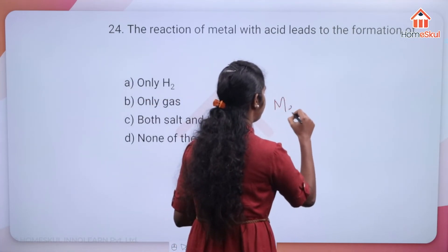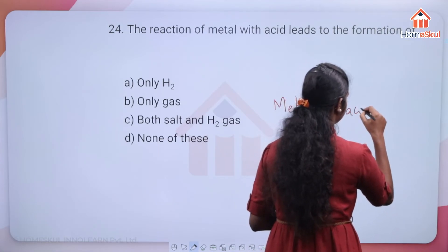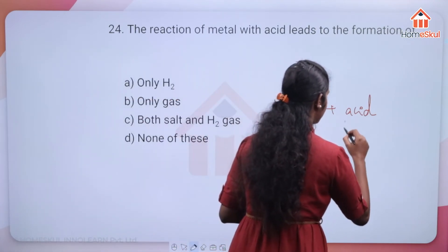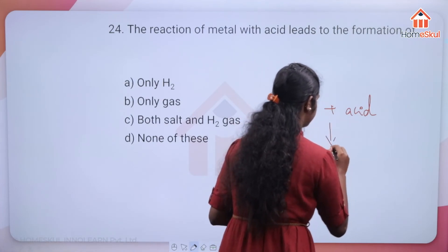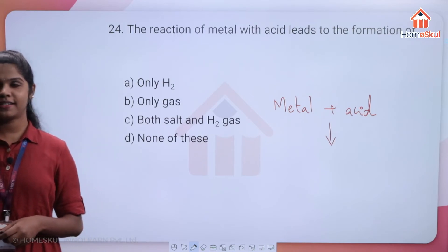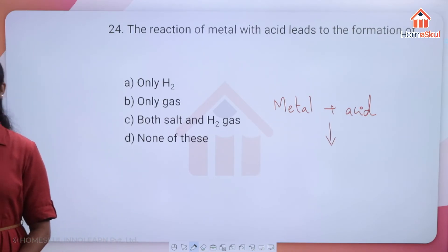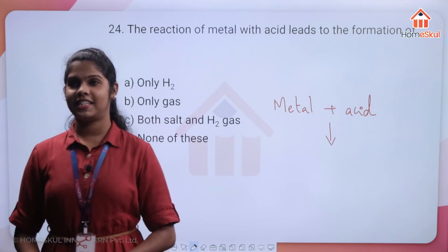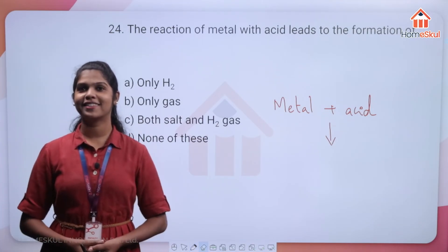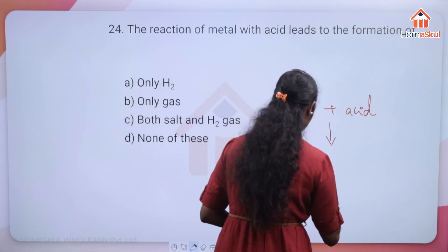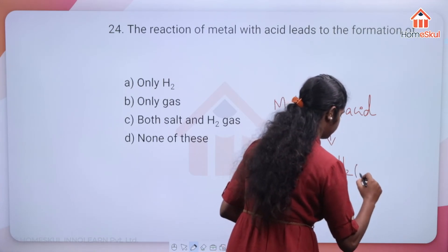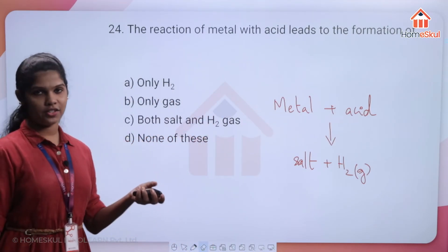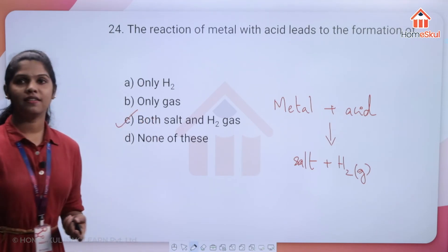When a metal and an acid react, we get salt and hydrogen gas. Option C — both salt and hydrogen gas — is the correct answer.